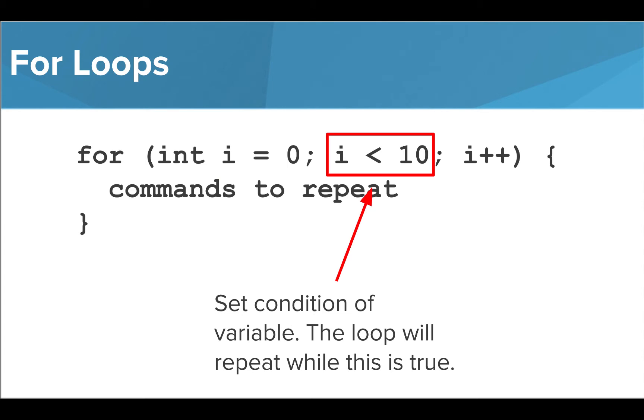After a semicolon, we write the condition for the for loop. In this case, we want the loop to continue while the value of i is less than 10. An important note here is that the value we put here will not actually be included in the loop, because we are only continuing the loop while the values are less than 10. This means that the last time through the loop in this case is when i equals 9.